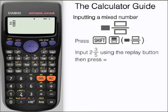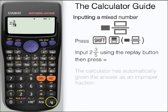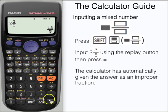We're going to input 2 and 3 fifths. So first input your 2 as your integer component and then 3 fifths as the fraction component. Press equals. The calculator has automatically given the answer as an improper fraction, 13 over 5.